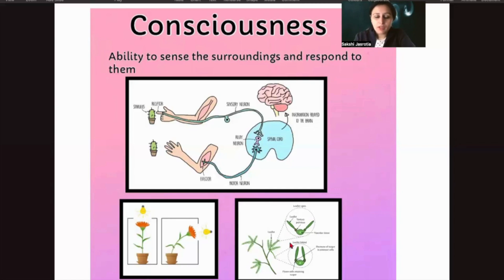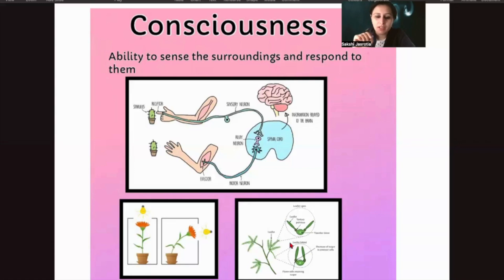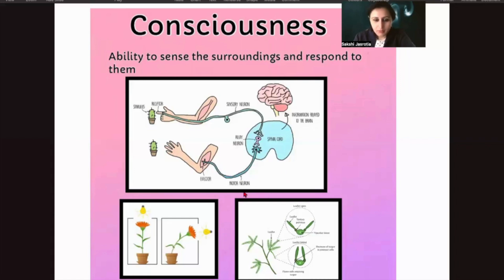We also know about the touch-me-not plant. Initially, the leaves are wide open, but the moment you touch it, the leaves curl themselves. Some chemicals inside are released at the time of touching — the plant senses it and curls its leaves. This type of consciousness is also shown by all living organisms.